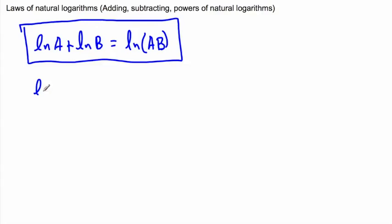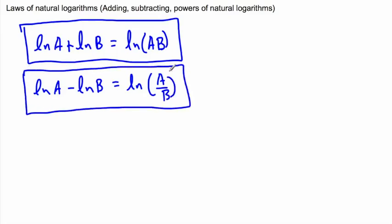Same thing if we subtract them. Natural log of A minus natural log of B - we have a similar thing going on to what happened with regular logarithms. We have natural log of A divided by B. That's another useful rule for us.